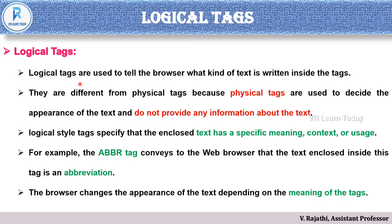What is a logical tag? For example, the physical tag B will be bold. Similarly, the logical tag will be 'strong' — that is the same bold text. But the strong tag conveys stronger meaning and can be easily understood. A physical tag does not provide any information about the text, but a logical tag can be easily understood. Logical tags specify that the enclosed text has a specific meaning and context of usage.